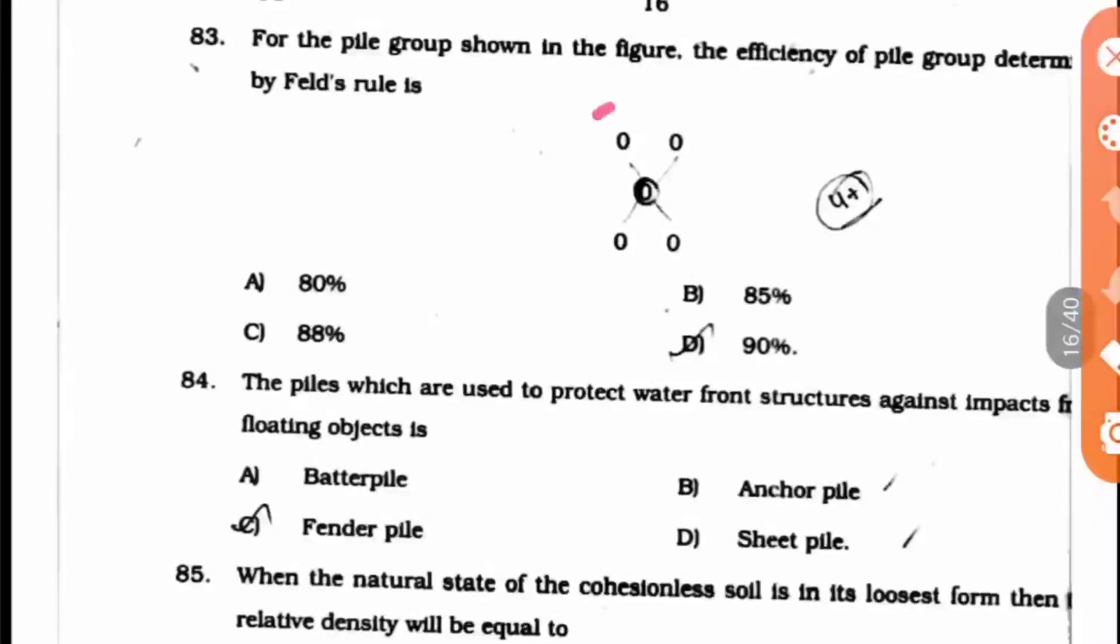If we take this corner pile, it is having 3 piles adjacent to it: this is 1, this is 2, and this is 3. So it should be multiplied by 3 into 1/16. This much efficiency has to be reduced from that pile's efficiency.